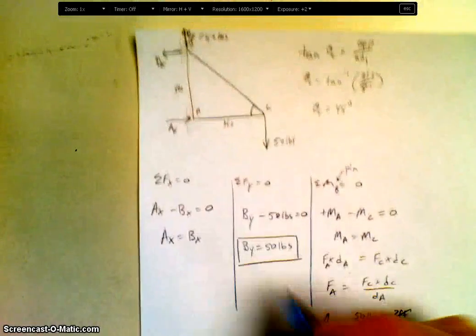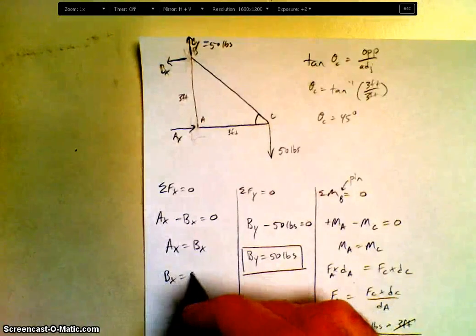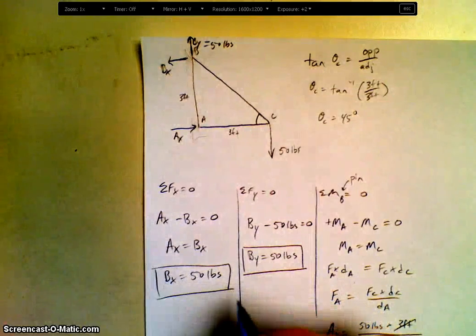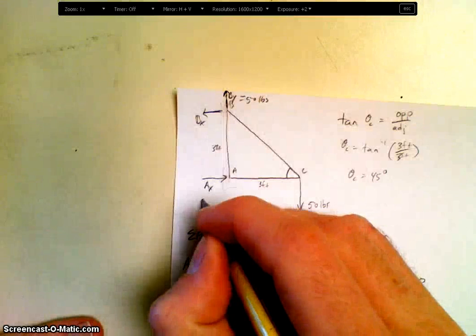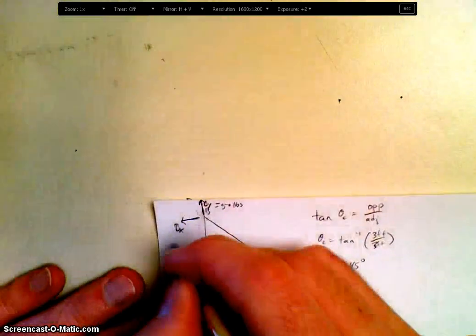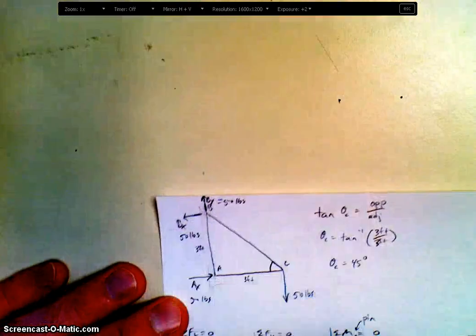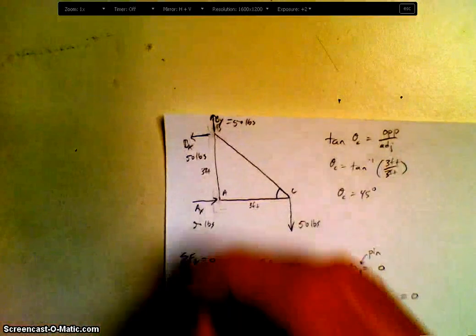And now if AX is 50, what is BX? 50 pounds. Again, confirming our direction. And there's our free body diagram with all of our reaction forces.